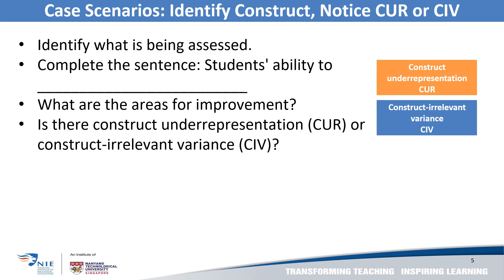To deepen our understanding of the threats to construct validity, we are going to look at certain case scenarios. On the Google site, you will find case studies of alternative assessment designs for different subject disciplines. Choose one and identify what is being assessed — begin by completing the sentence: 'This test is assessing students' ability to do what?' It could be students' ability to write a paragraph or write an explanation. In thinking about areas for improvement, consider these two ideas: construct underrepresentation or construct irrelevant variance.